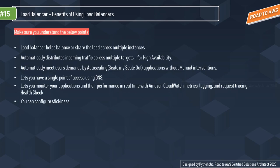The load balancer balances load across multiple instances, improving performance, increasing fault tolerance, and keeping availability high. When used alongside auto scaling groups, it helps auto scale — scale in or scale out — without manual intervention. If an instance gets terminated, the ASG can spin up a new one to ensure consistency. With a load balancer, you also get a single DNS name that you can bind to a security group for all your instances.